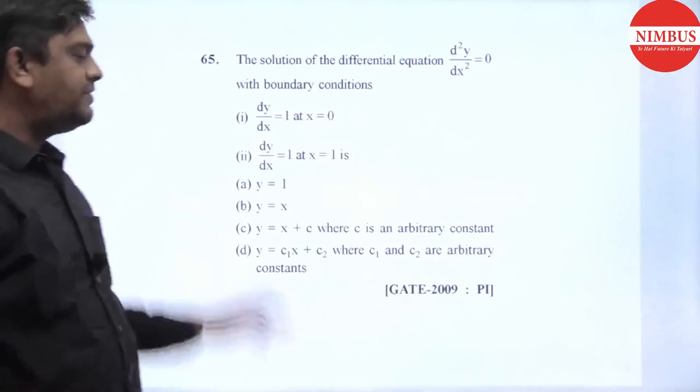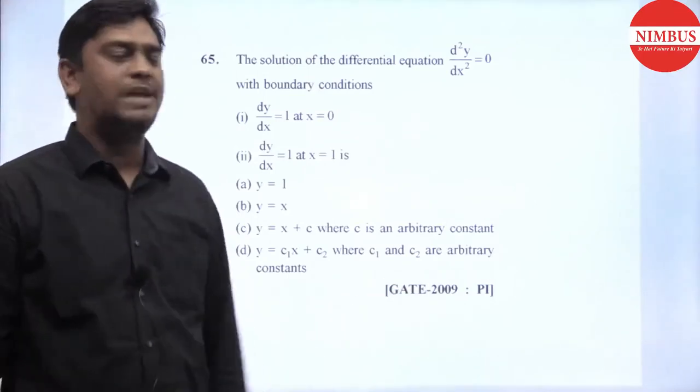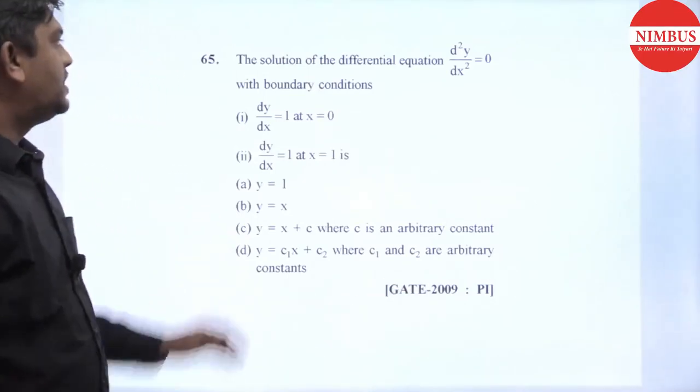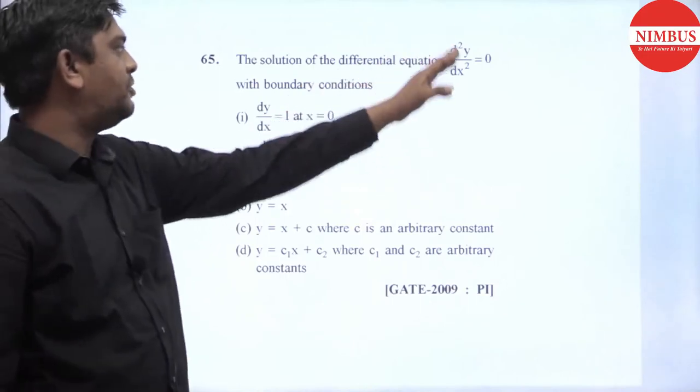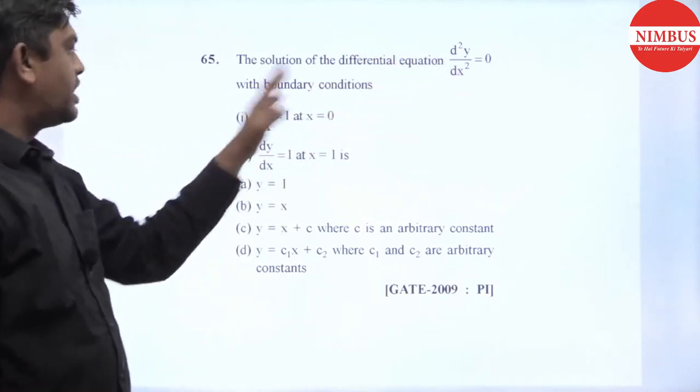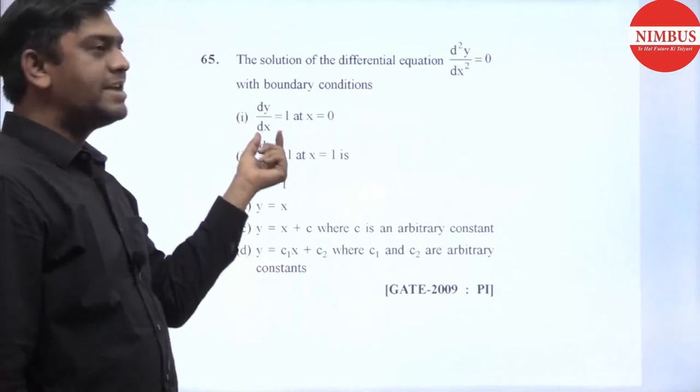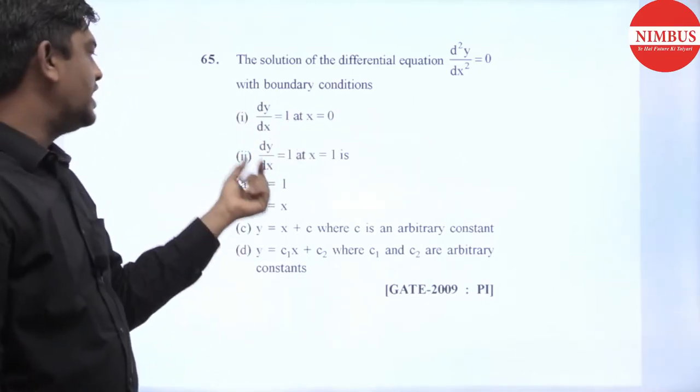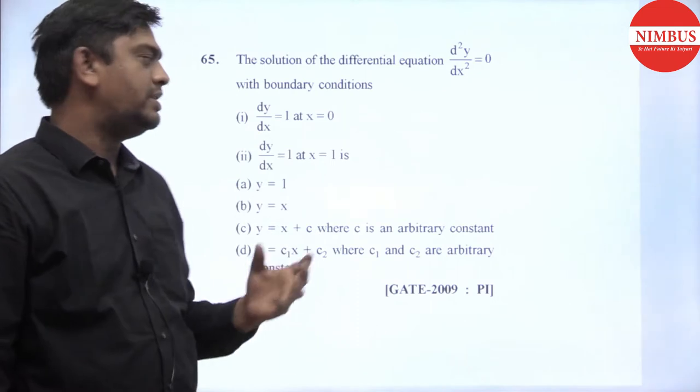Hello students, question number 65 is from GATE 2009 PI branch. In this question I have asked the solution of the differential equation d²y/dx² = 0 with boundary conditions: first, dy/dx = 1 at x = 0, and second, dy/dx = 1 at x = 1.